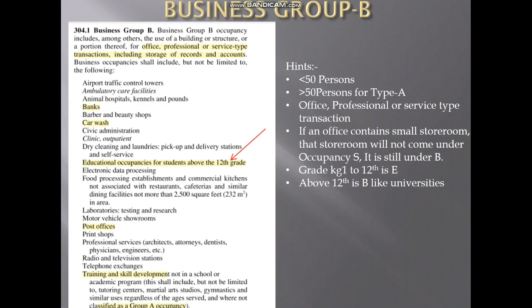Then, Business Group B. Business Group B is for groups with less than 50 people — if it is more than 50 people, then it will be occupancy type A. Mainly we use Business Group B for office, professional, or service type transactions, including storage of records. Because sometimes in an office building there will be a small place for storing records, and we cannot call that small store a storage occupancy — it is part of the office building and comes under Business Group B.